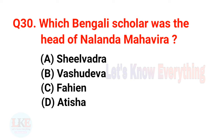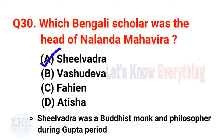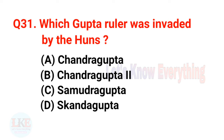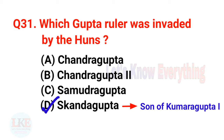Question 30: Which Bengali scholar was the head of Nalanda Mahavihara? Options: A — Shilabhadra, B — Vasudeva, C — Fa Hien, D — Atisha. Right answer: option A — Shilabhadra, a Buddhist monk and philosopher during the Gupta period. Question 31: Which Gupta ruler was invaded by the Huns? Right answer: option D — Skandagupta, who was the son of Kumar Gupta I.